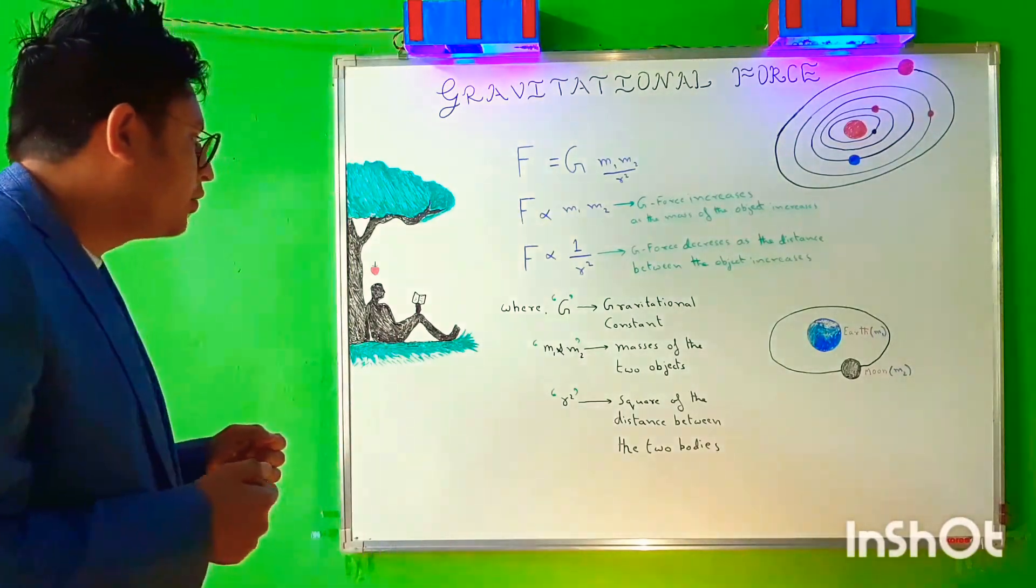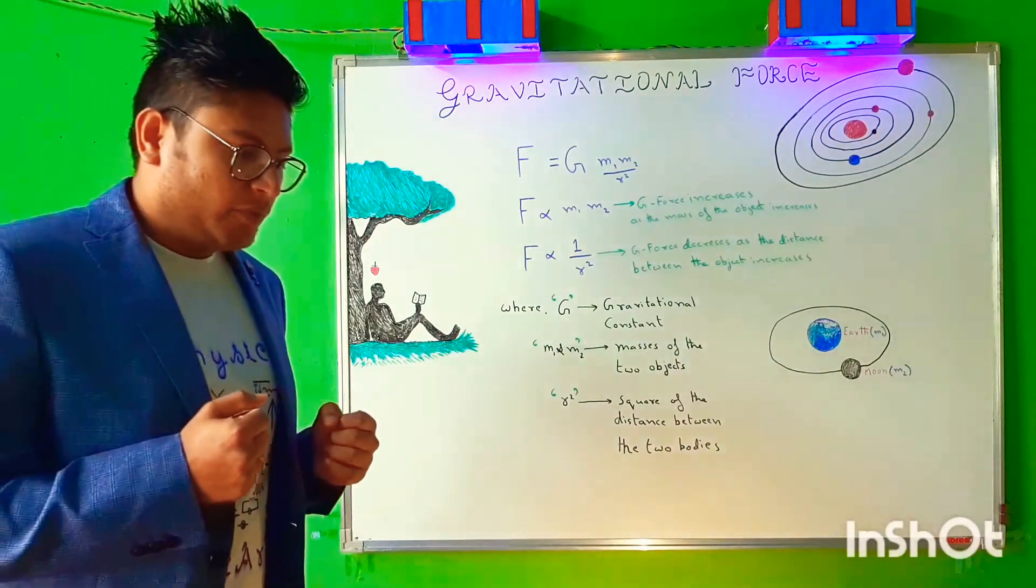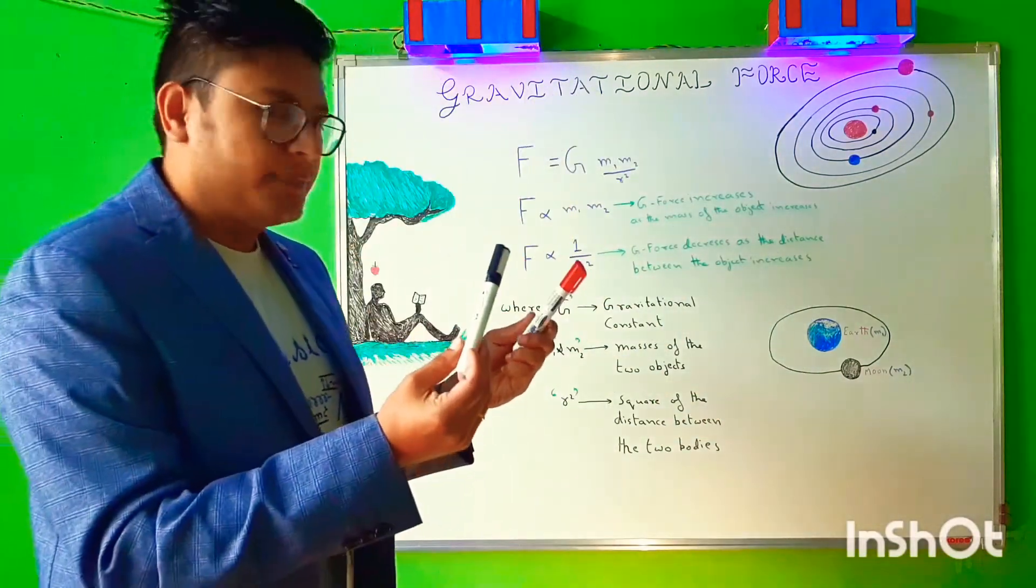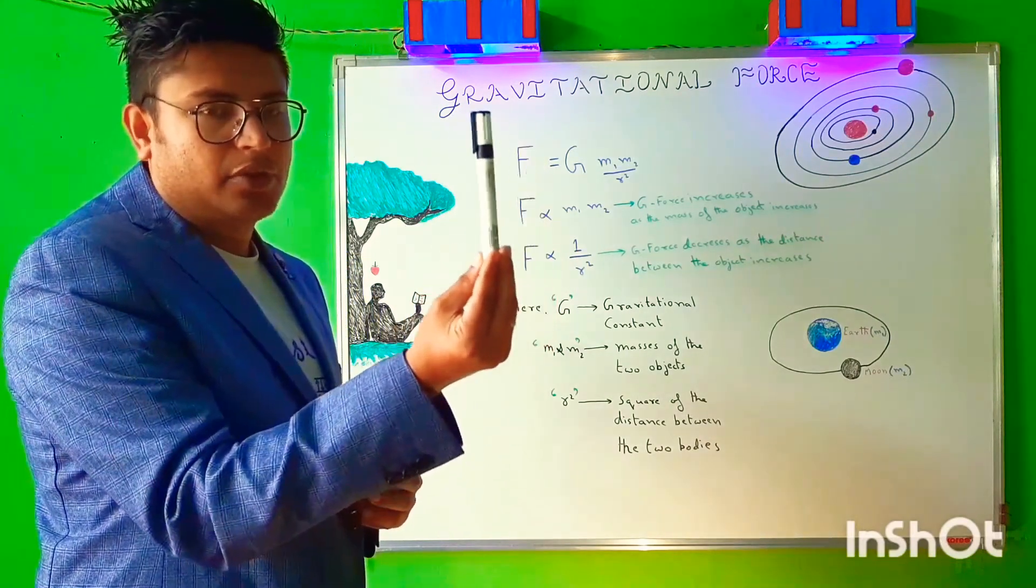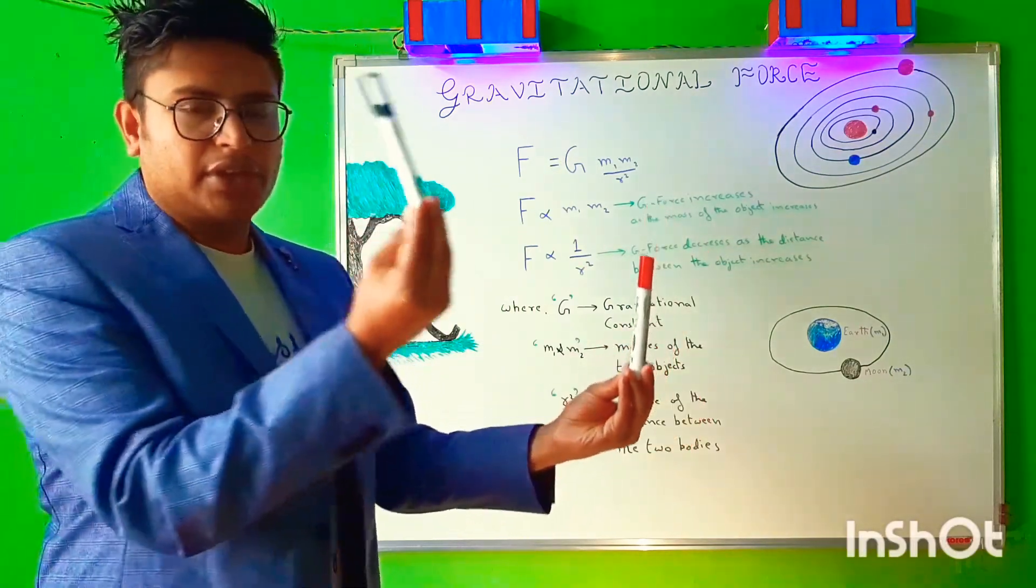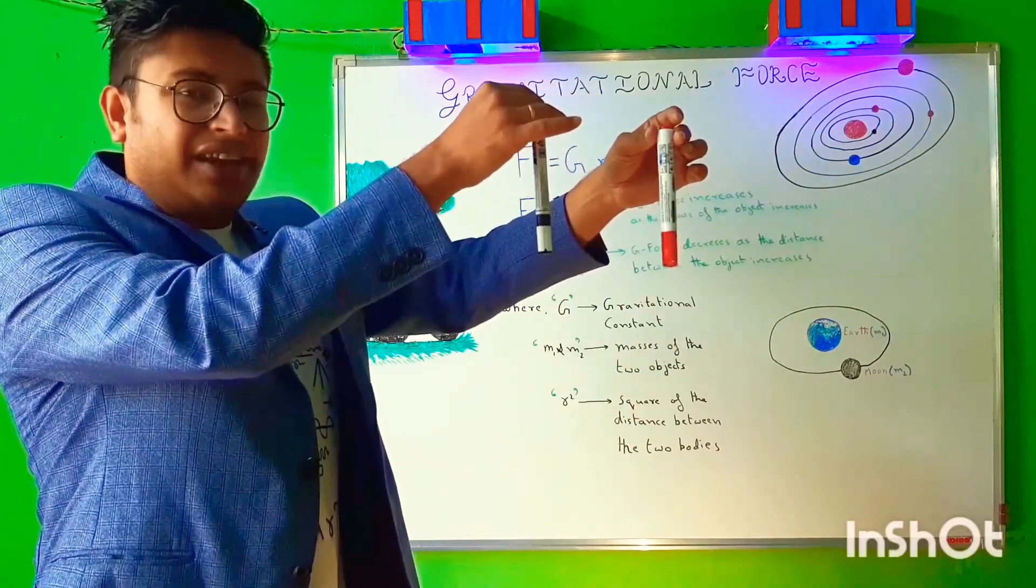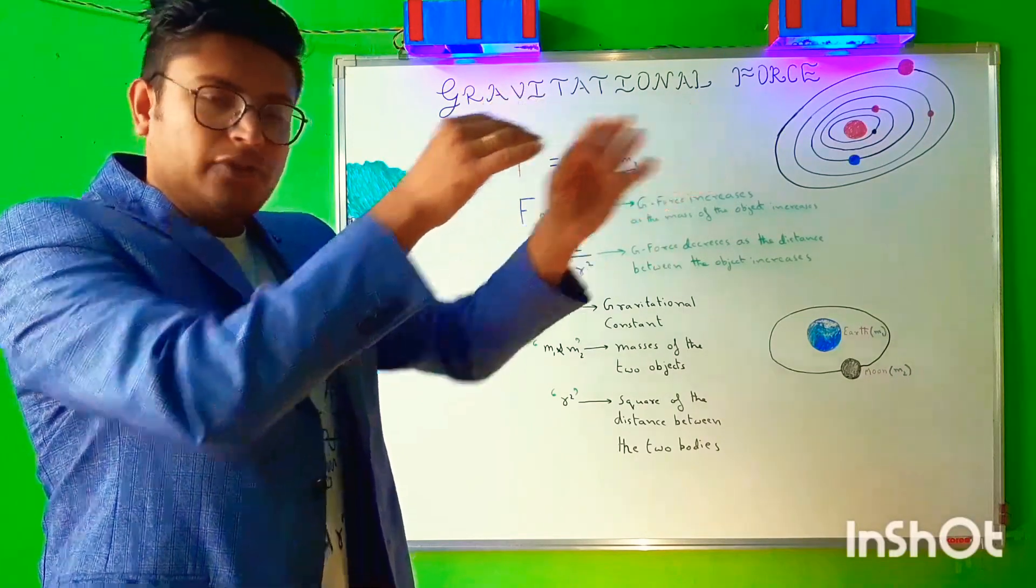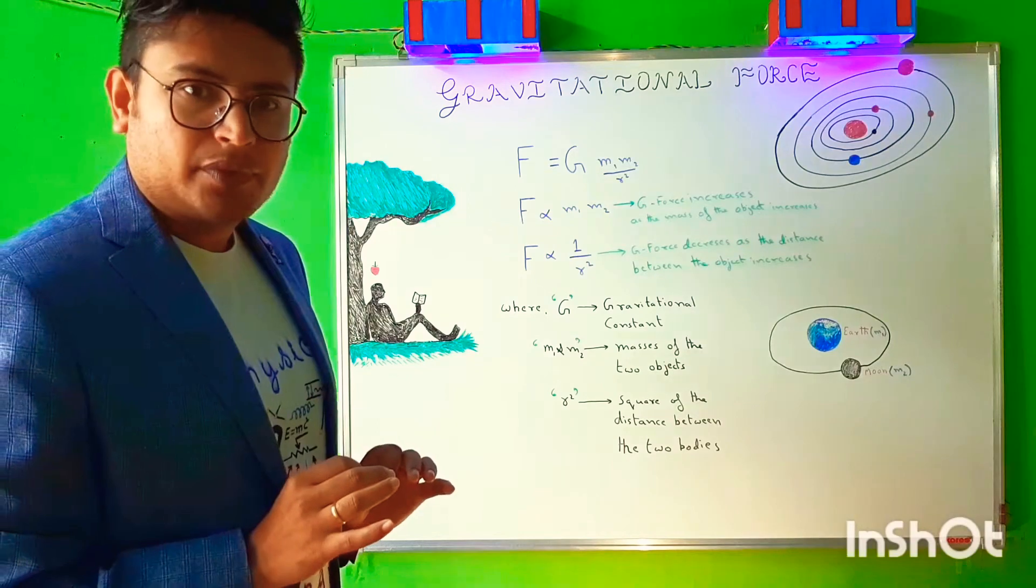Then he comes out with a particular law, that is the law of gravitation, where he explains that any two objects having different masses, for example, this particular object as 100 grams and this particular object as 500 grams. So any two objects when released from the same height with initial velocity of zero fall at the same speed and at the same time.